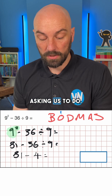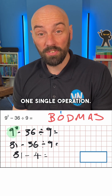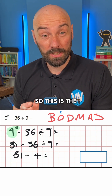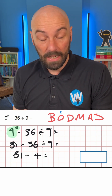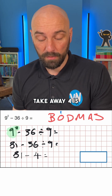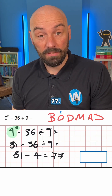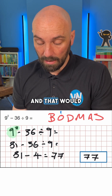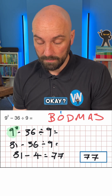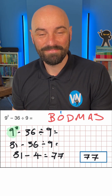That's all it's asking us to do. At that point there's only one single operation, so this is the final part of the question. 81 take away 4 is 77. Very straightforward, and that would be our answer. And that's another SATs question solved.